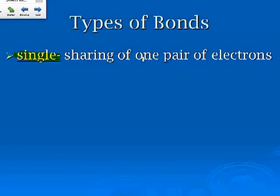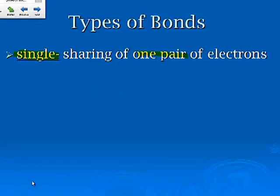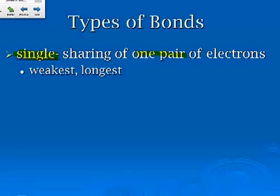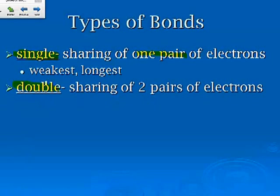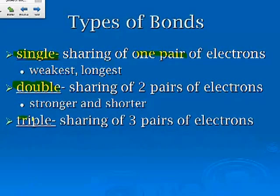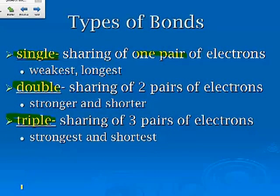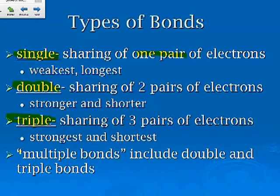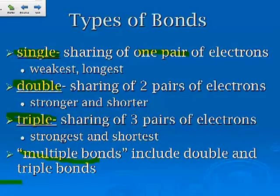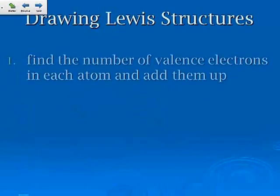Single bonds are the sharing of one pair of electrons. They are the weakest and the longest. Double is sharing of two pairs of electrons, stronger and shorter. Triple is the sharing of three pairs of electrons, the strongest and the shortest. We refer to the term multiple bonds as including both triple and double bonds.